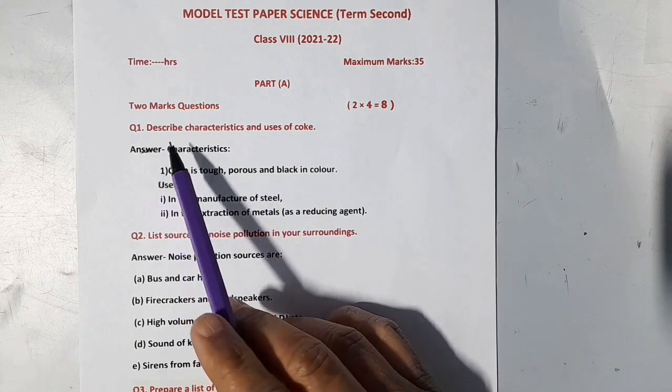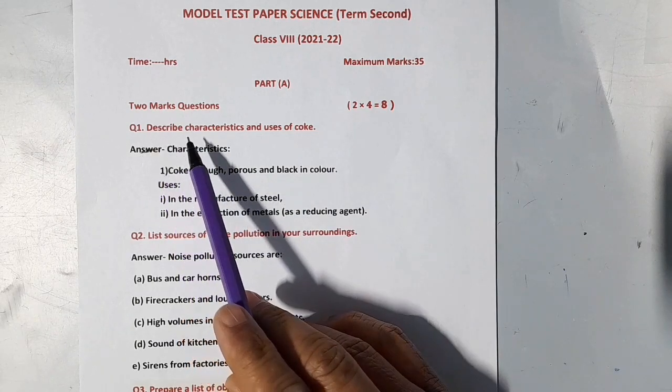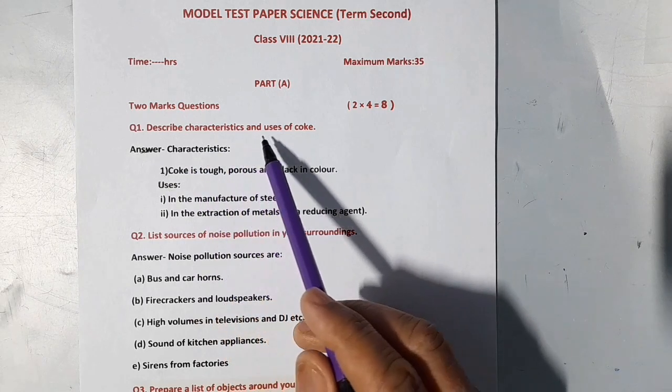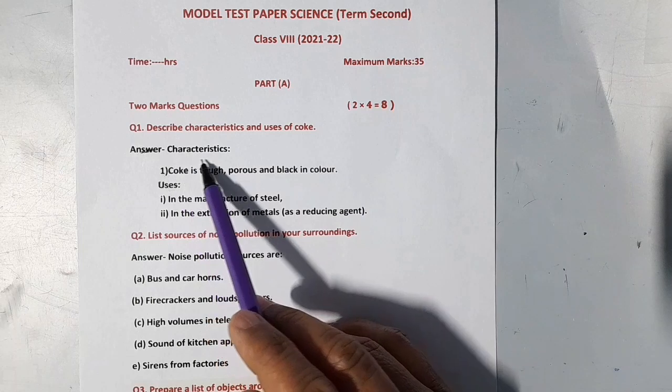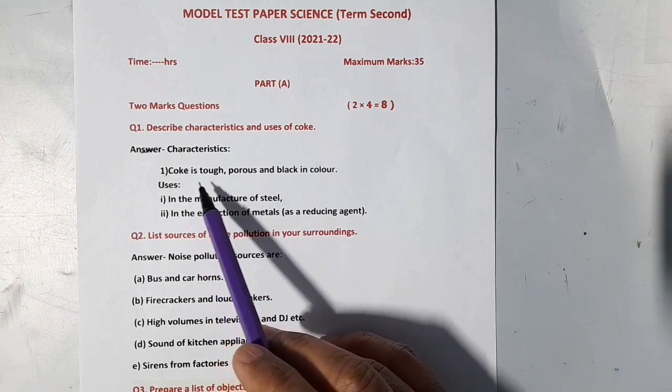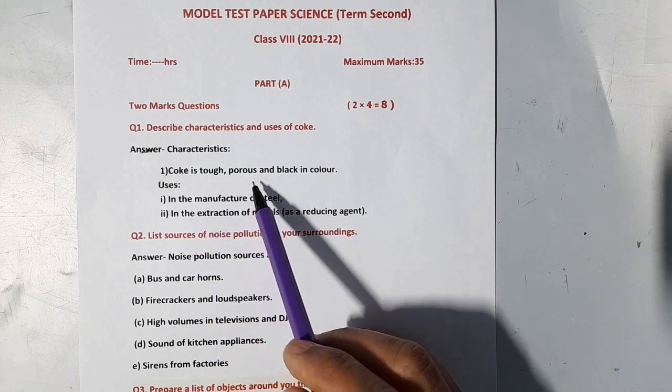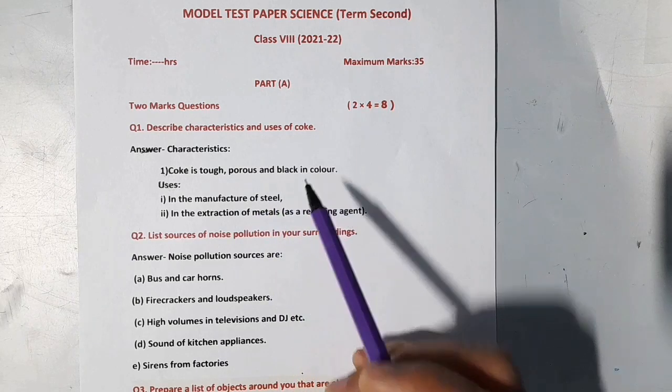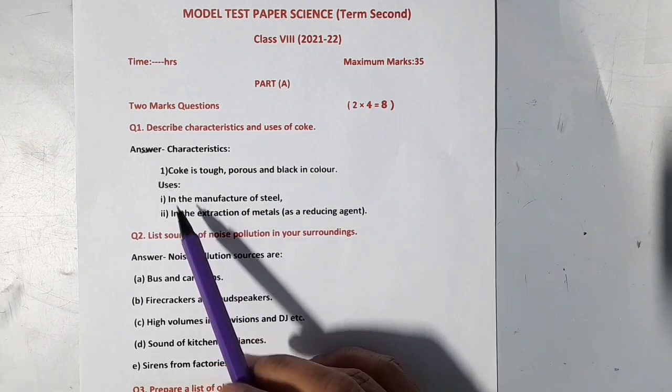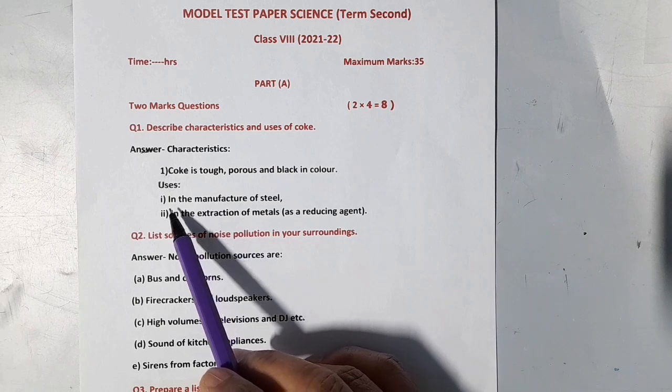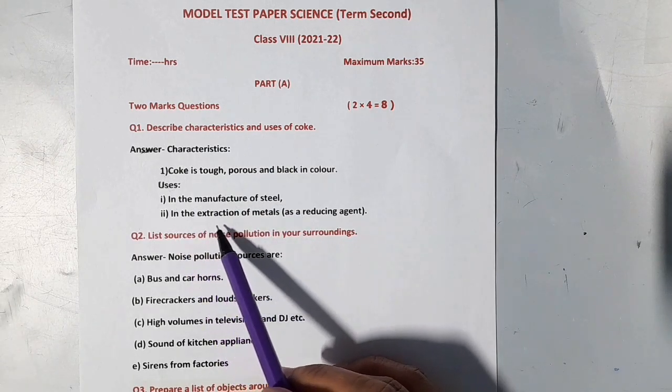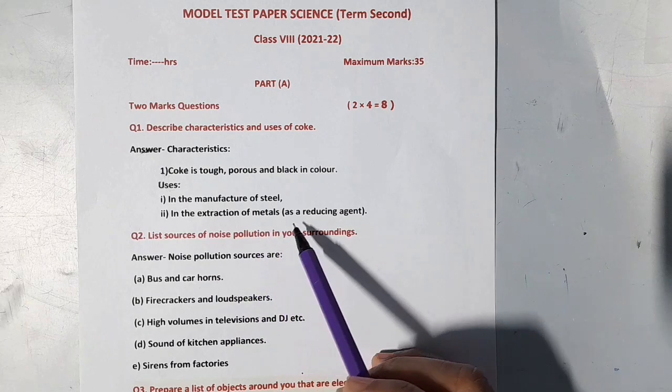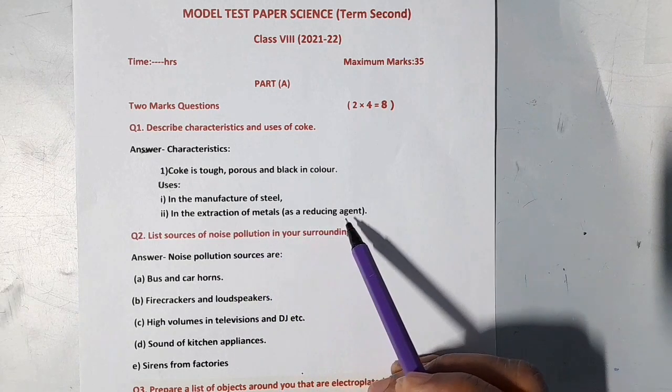First question is describe characteristics and uses of coke. First, characteristics of coke: Coke is tough, porous and black in color. Its uses are: It is used in the manufacture of steel. It is used in the extraction of metals as a reducing agent.